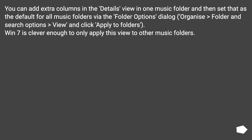You can add extra columns in the details view in one music folder and then set that as the default for all music folders via the Folder Options dialog: Organize > Folder and Search Options > View, and click Apply to Folders. Windows 7 is clever enough to only apply this view to other music folders.